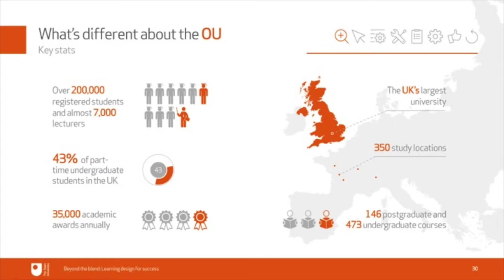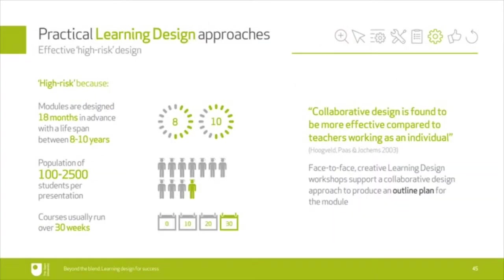At the OU we design courses that are going to be studied by thousands of students, but we need to do it all at the beginning. Although there is some scope for adjustment as courses go on, we really need to put a lot of time into thinking about what's going to work and what's going to be an engaging course. Typically it takes us about 18 months to design a course at the OU, and it will then run for something like 8 to 10 years. So right at the start of that design process, all of the academics and course teams have to go through a learning design workshop, and I've adapted some of those activities for you to use here this afternoon.